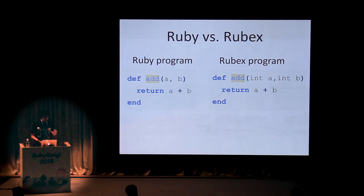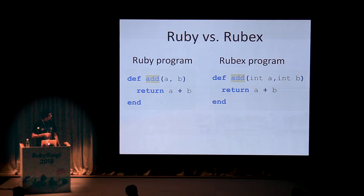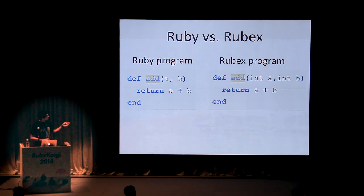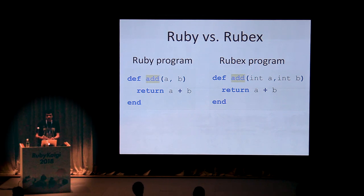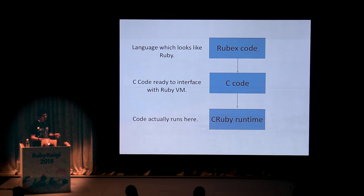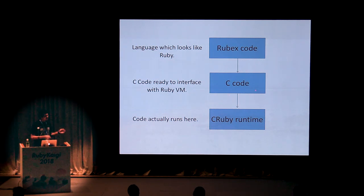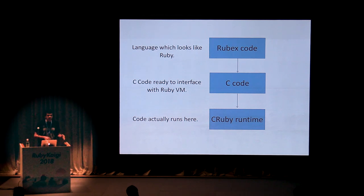Let me introduce you to a small snippet of Rubex. On the right hand side, you can see the Rubex program. The only difference from the Ruby program is that we have specified integer types for the A and B arguments. The add method is an exact Ruby method, accessible through a Ruby script, but it resides inside a C extension. Rubex will convert the arguments A and B from Ruby objects to C integers, make the addition in C, and return a Ruby object. The Rubex compiler is entirely written in Ruby, compiles into C code that interfaces with the Ruby VM using the C extension API, and then runs inside the CRuby runtime just like any other C extension.